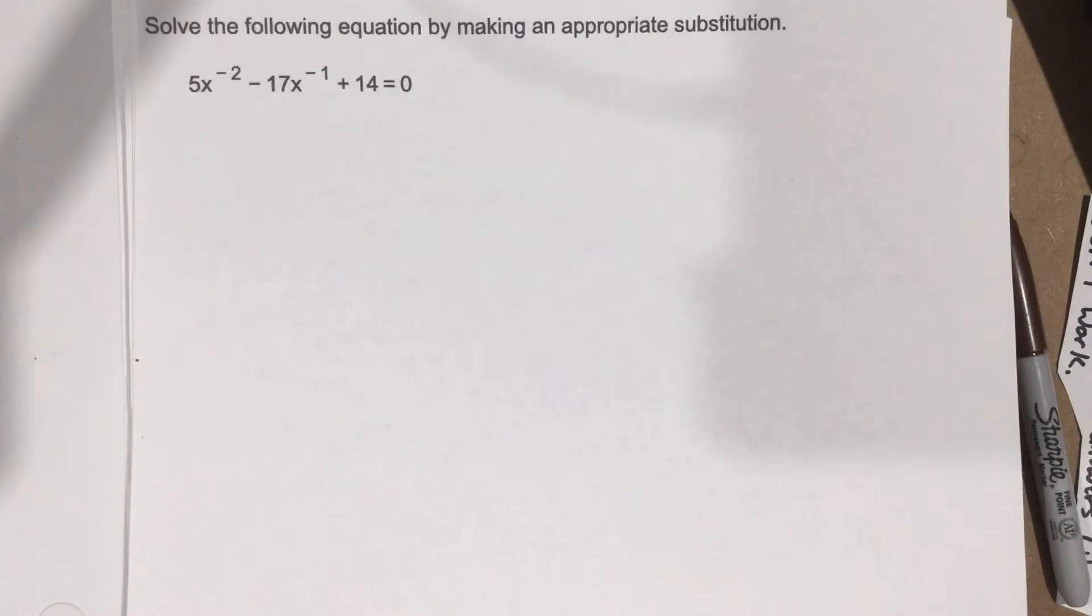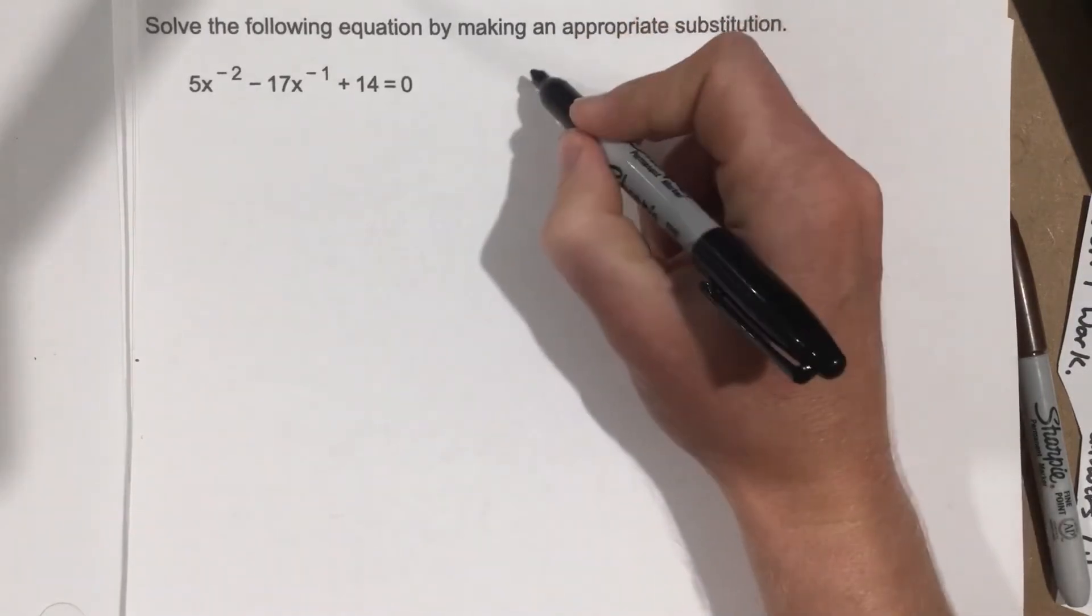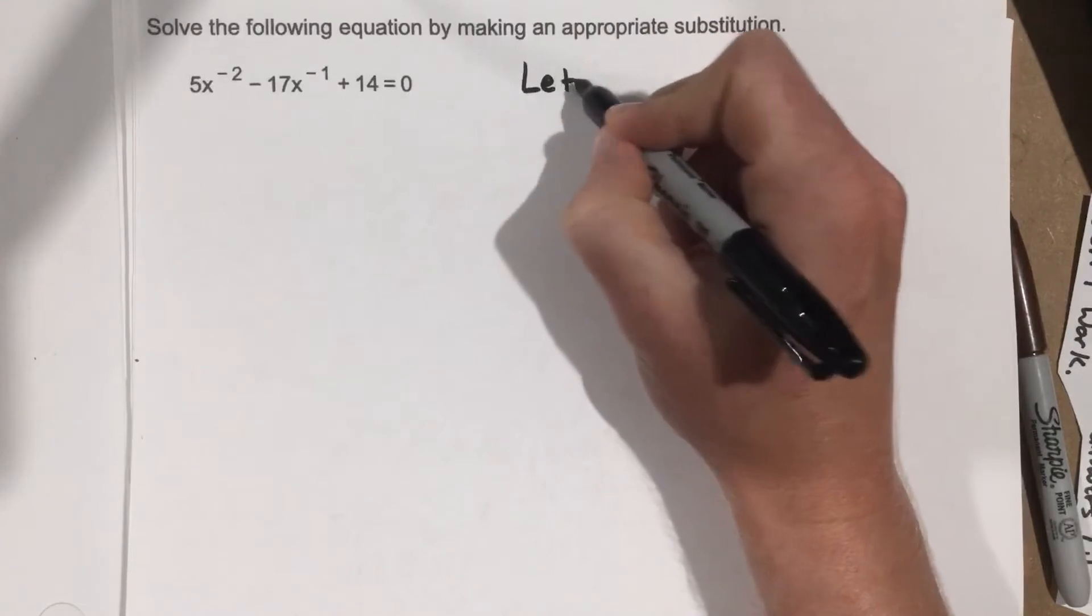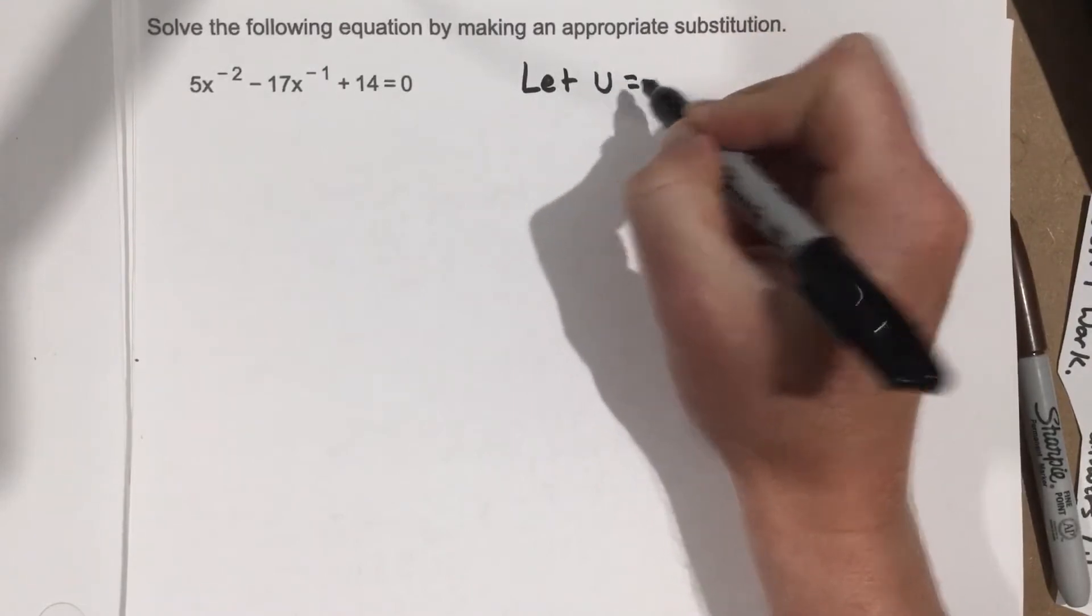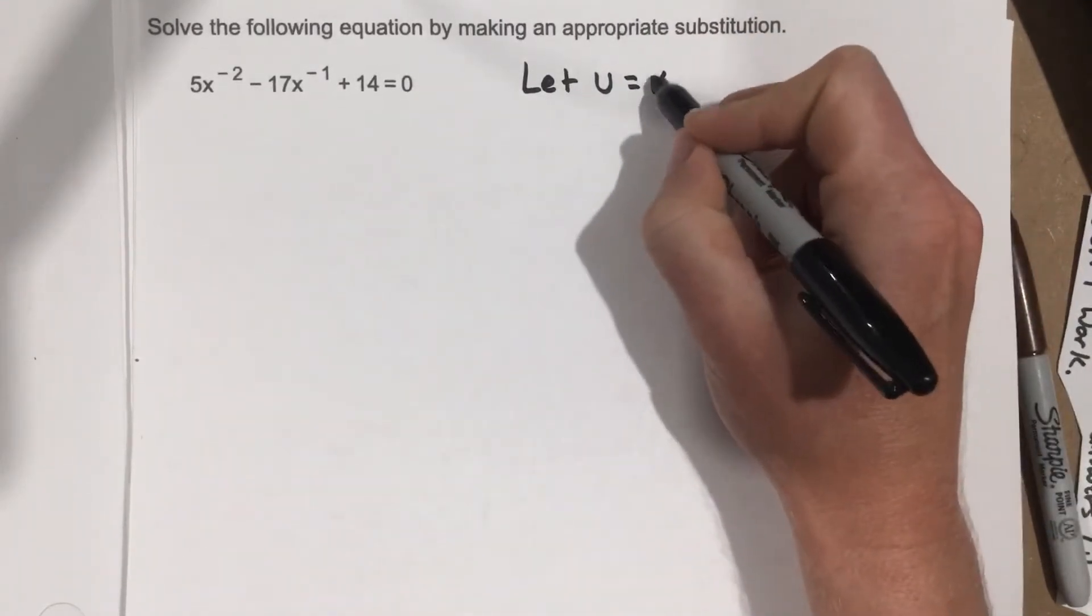We're going to essentially say that we're going to let a different variable, so we're going to say u, equal x to the negative 1.